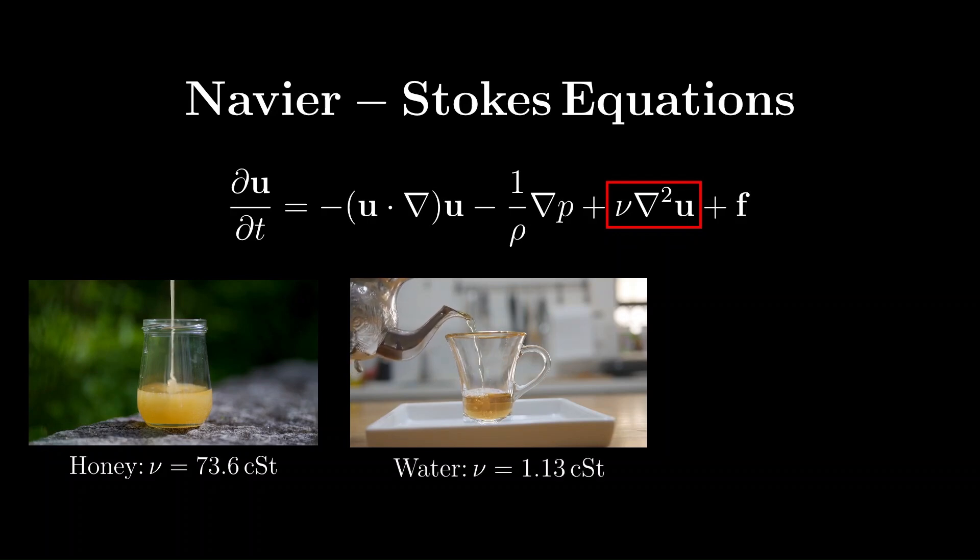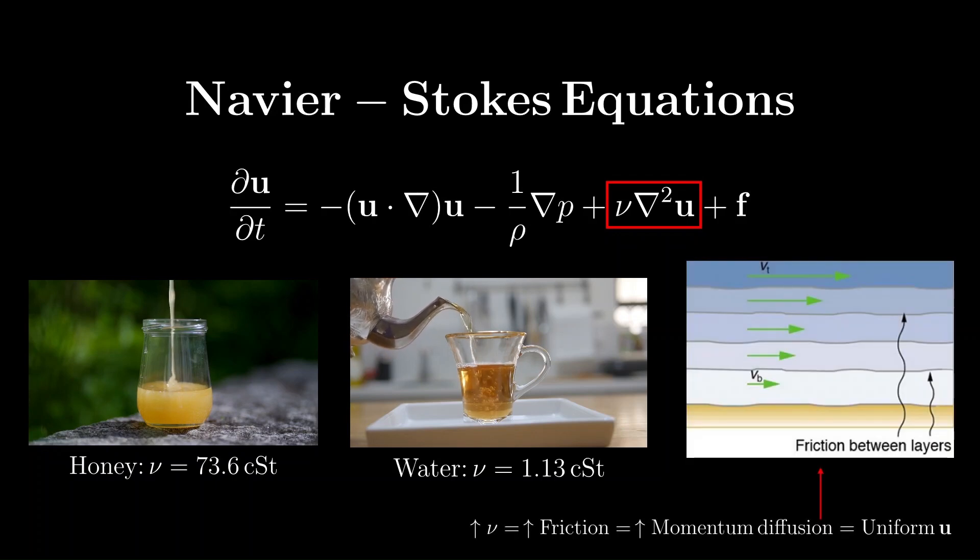A better way to think about viscosity is by imagining the fluid flows in layers. Each of these layers exerts some finite friction on each other, similar to how rubbing your hands together generates heat. This friction dampens differences in velocity, causing momentum to diffuse throughout the fluid. In highly viscous fluids, this diffusion happens faster, making the flow more uniform.